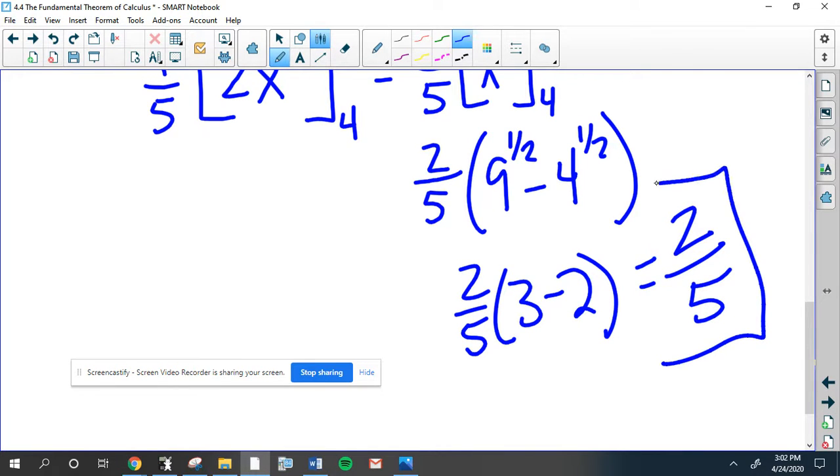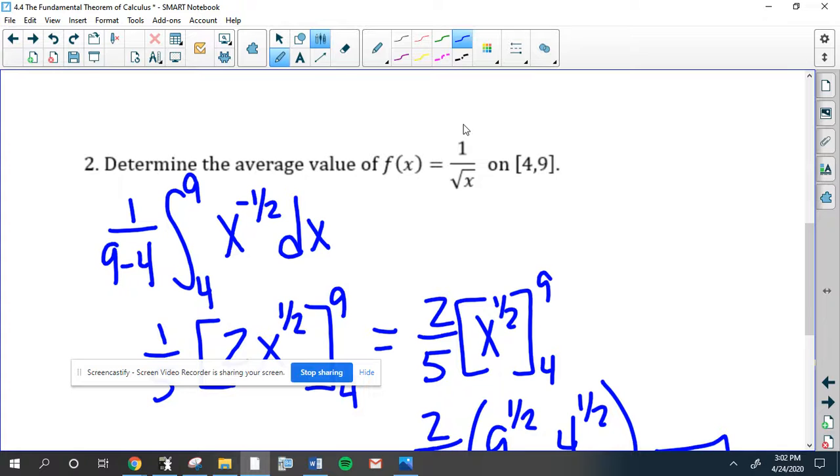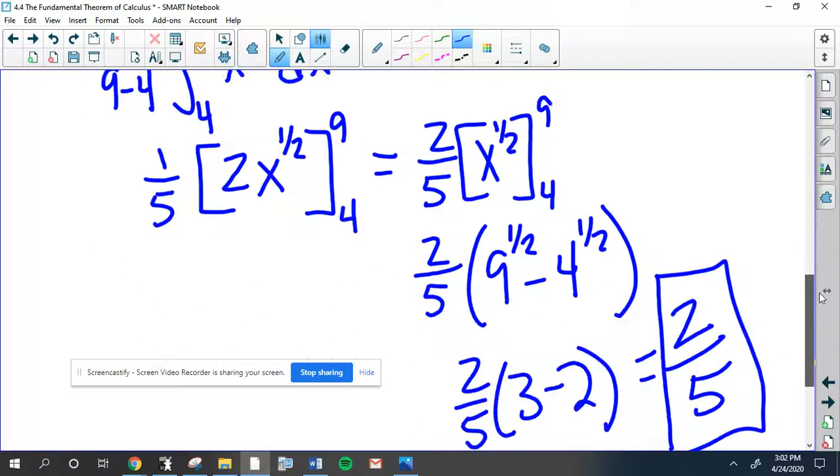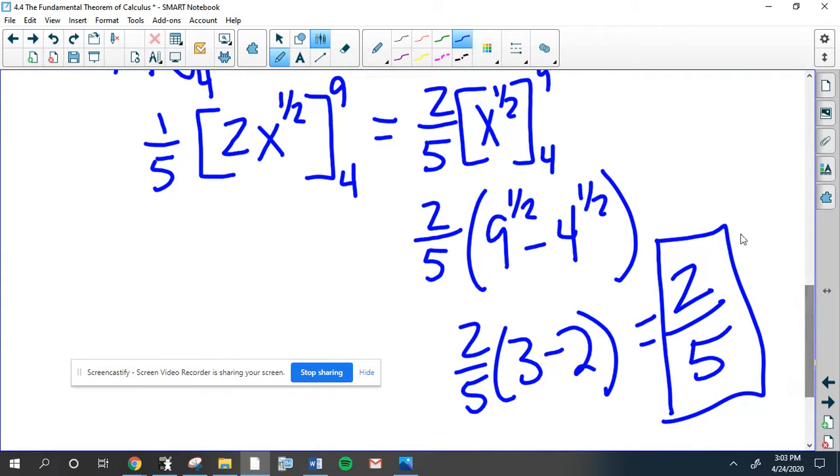So what you should do here, I'm not going to do it, but you should graph this original function on your graphing calculator. Look at it from 4 to 9. See if that makes sense that the average value of that function between 4 and 9 is about 2 fifths, you know, kind of close to 1 half.